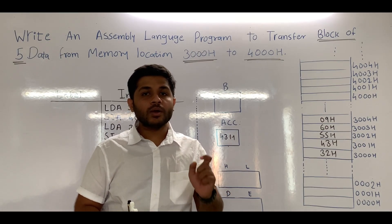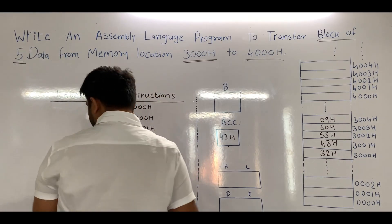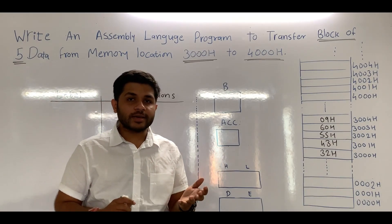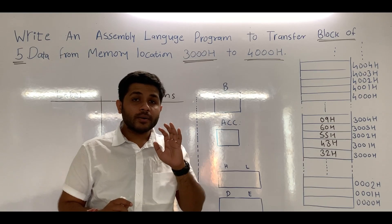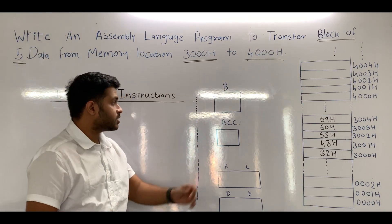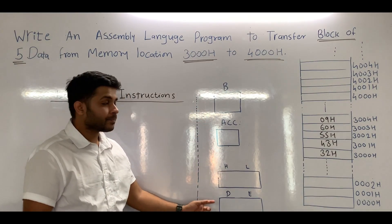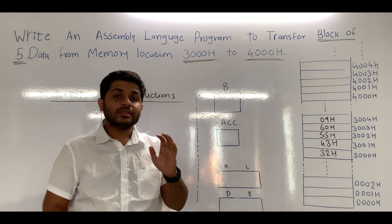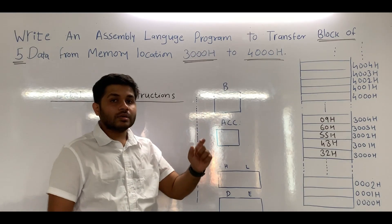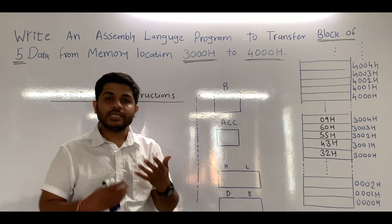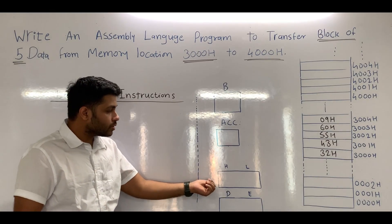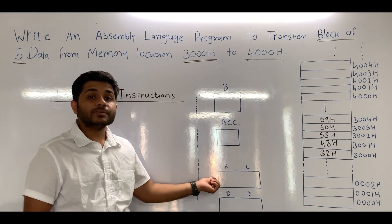We are going to perform the same program using a different method — using pointers. You can see there are some registers we are going to use: register B, accumulator, HL, and DE. In register B, we are going to store the size of the block. In this example, the size of the block is 5, so we are going to store 5 in register B. If the size of the block is 10, then we will store 10 in register B. We are going to use HL as the source memory pointer.